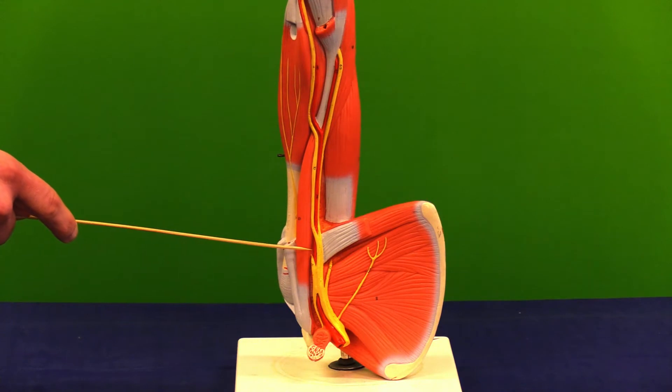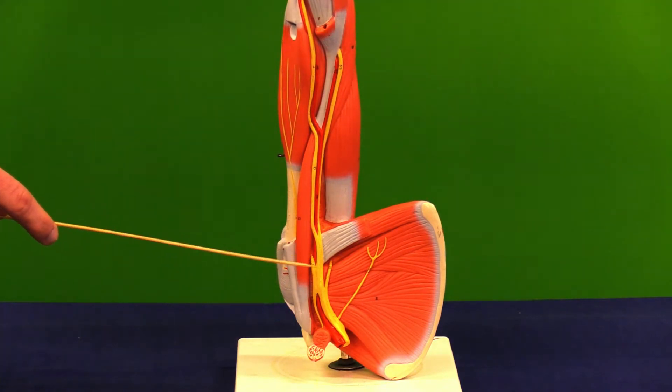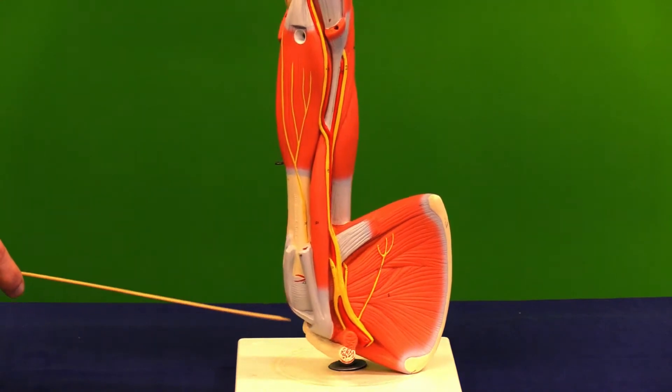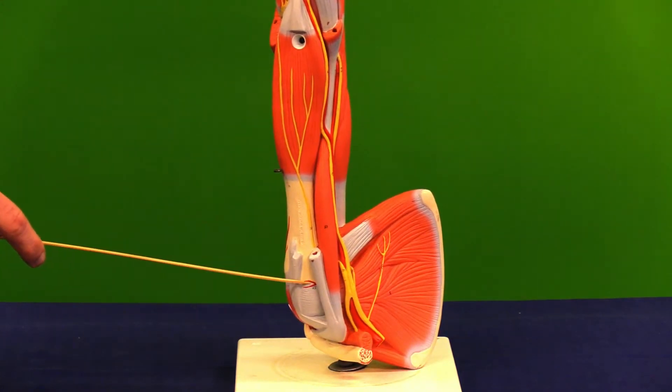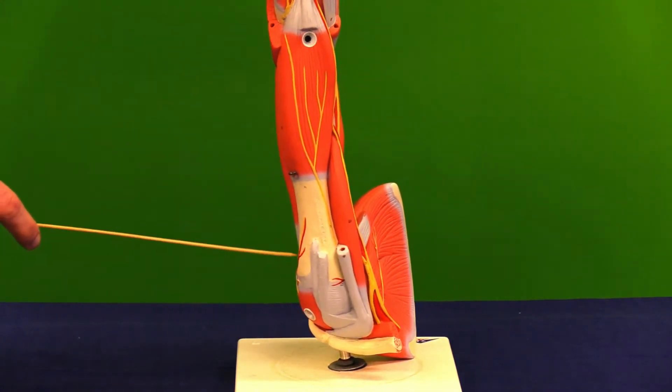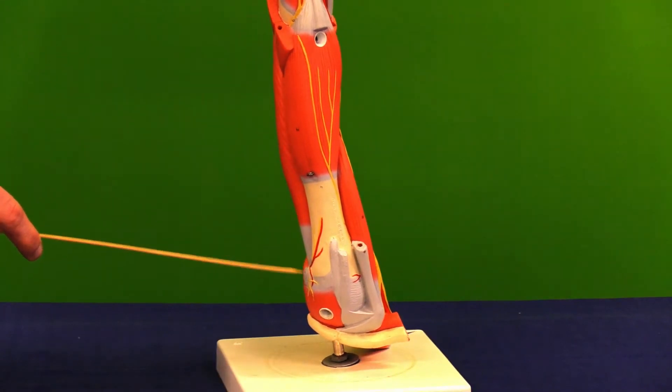Coming off of that, we do have anterior and posterior circumflex arteries that we can see circling around the humerus.